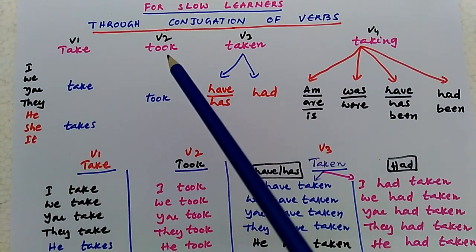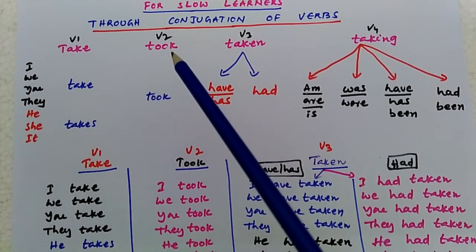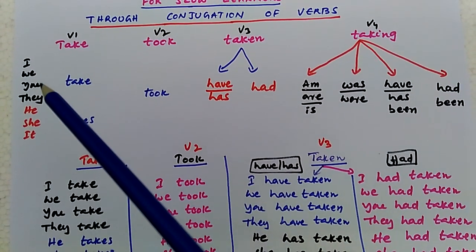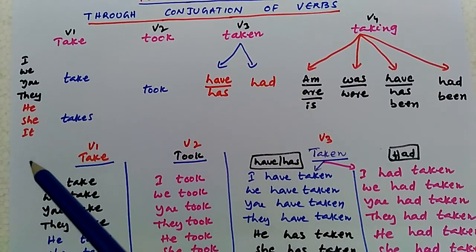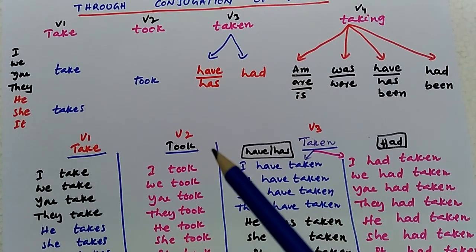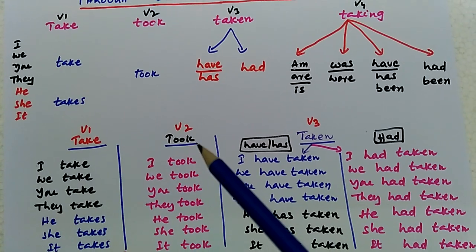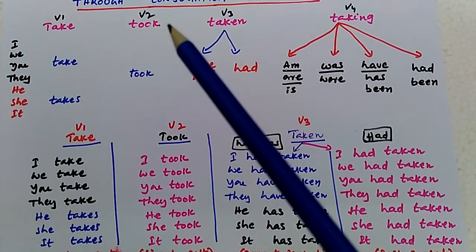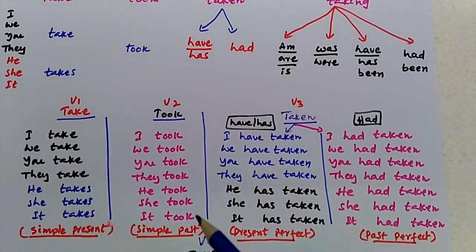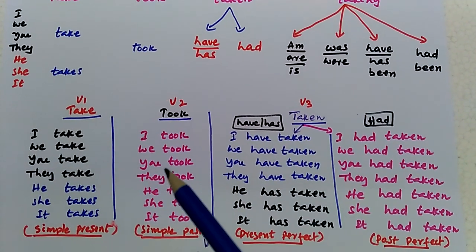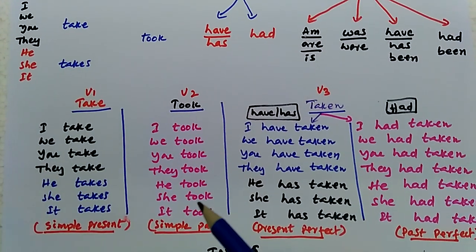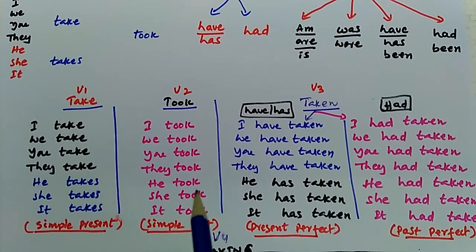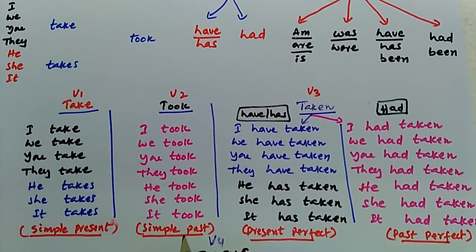And now verb two, that is 'took'. It is very easy for the children to write a table, just adding I, we, you, they, he, she, it. We can write the simple past table: I took, we took, you took, they took, he took, she took, it took. This is called the simple past table.